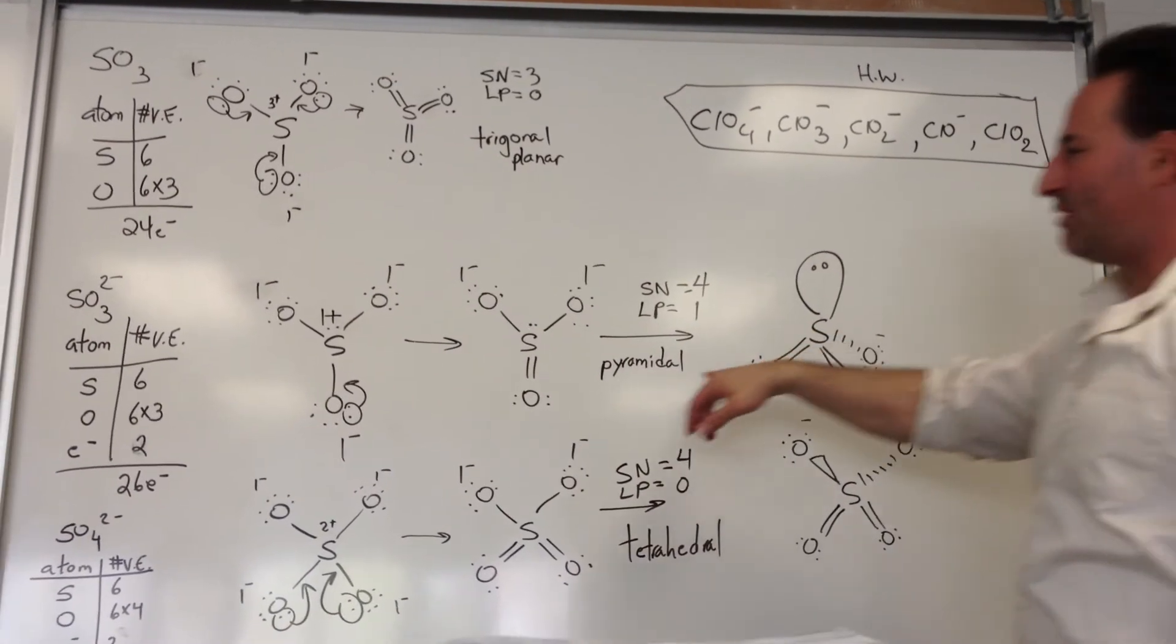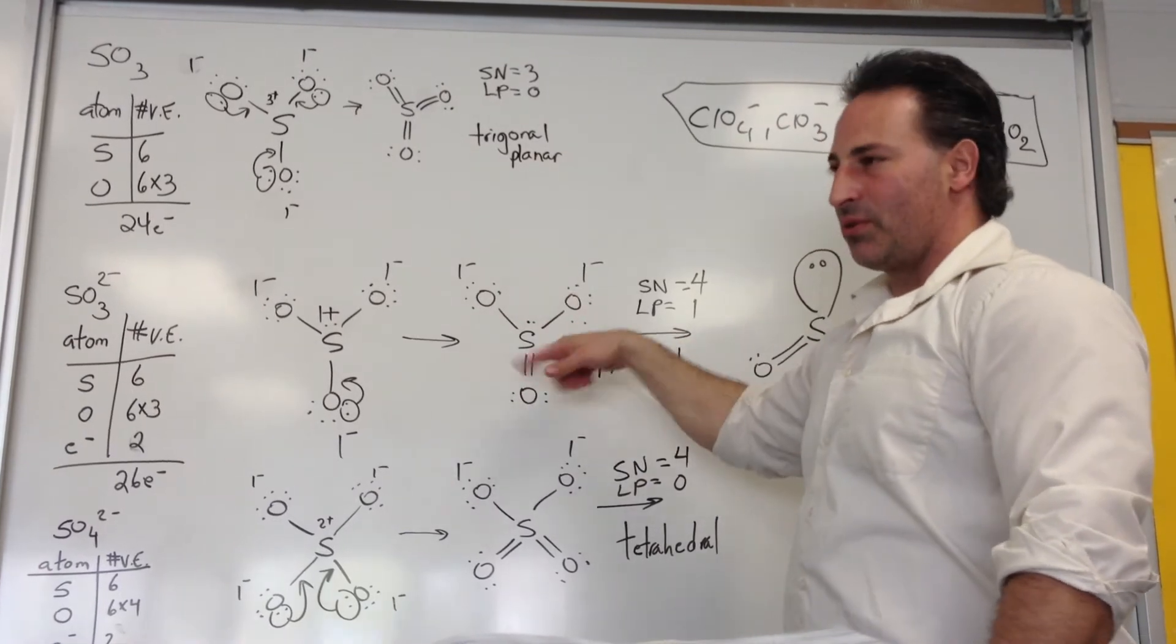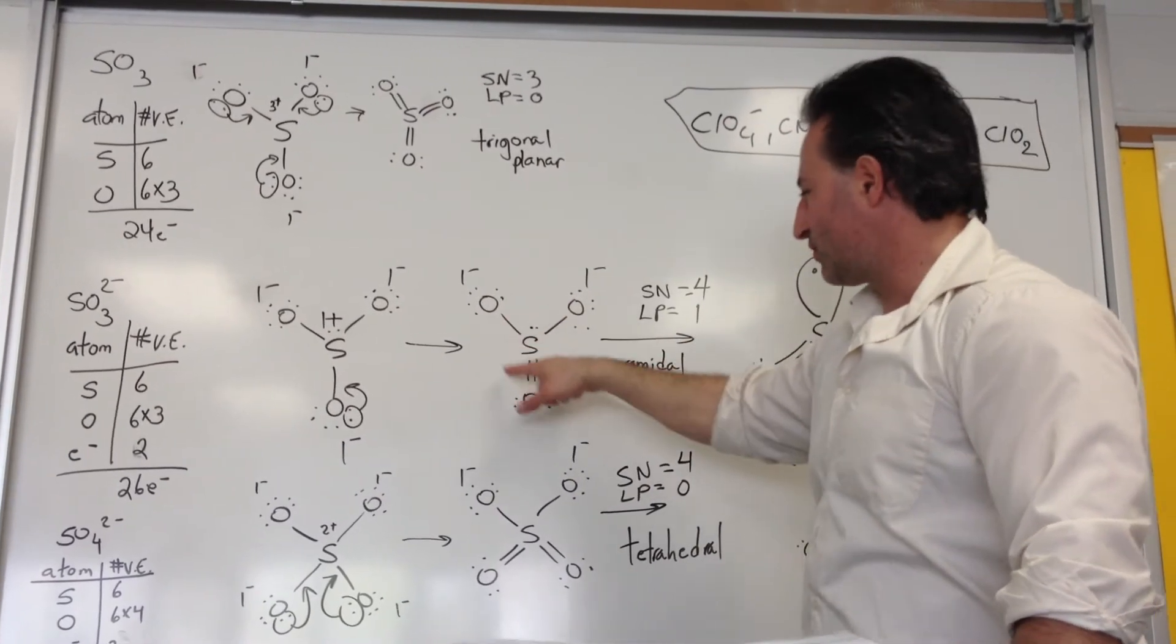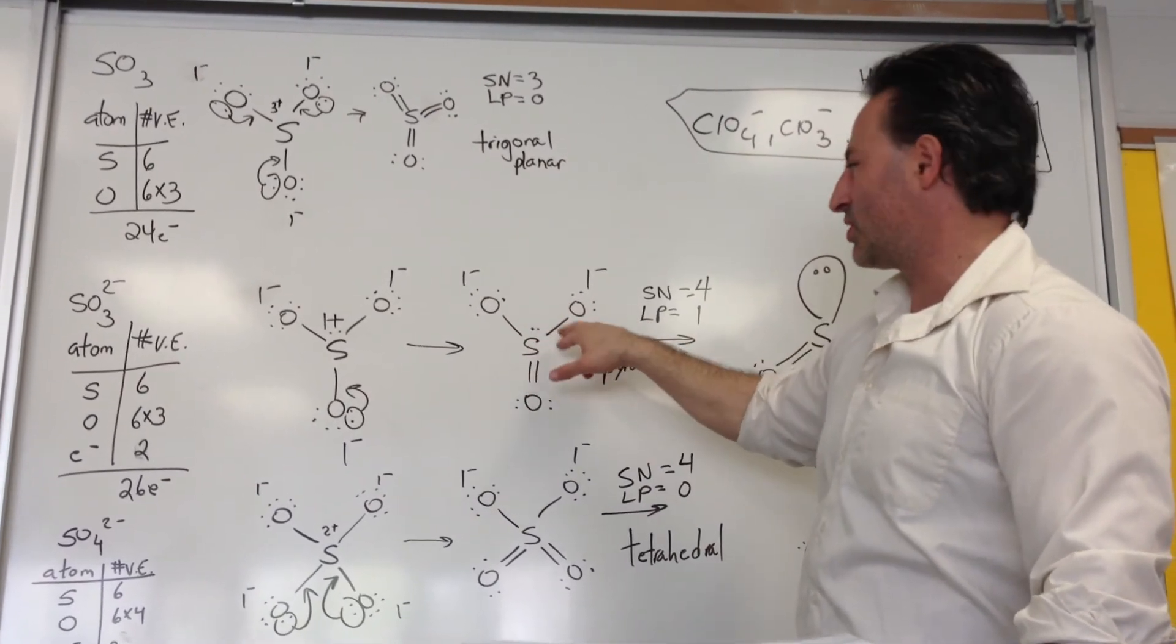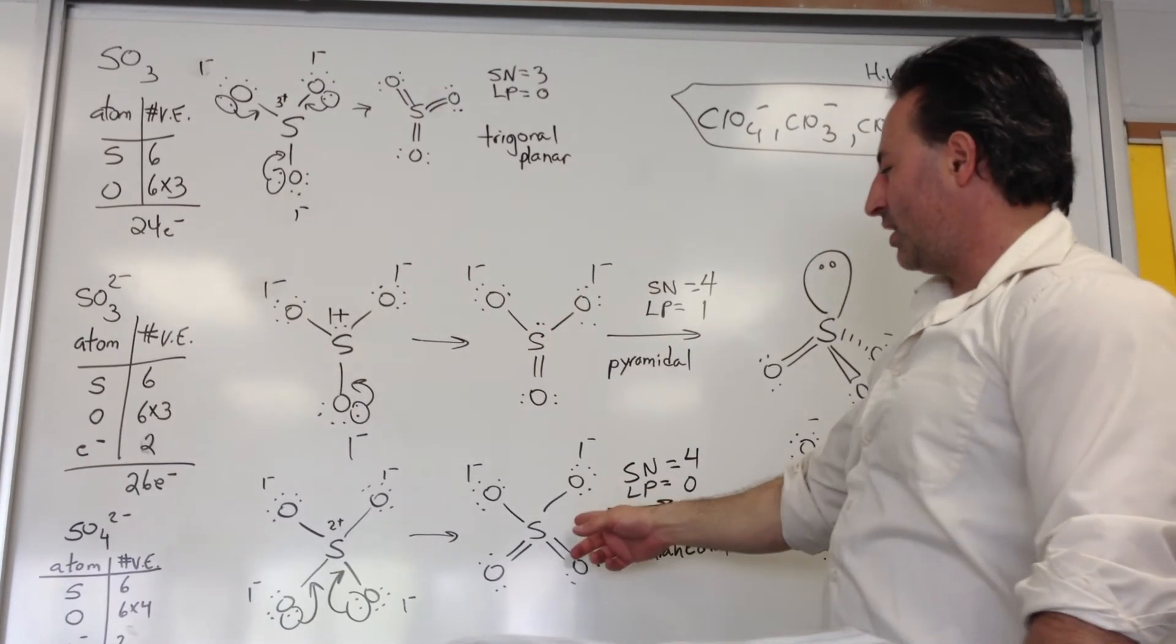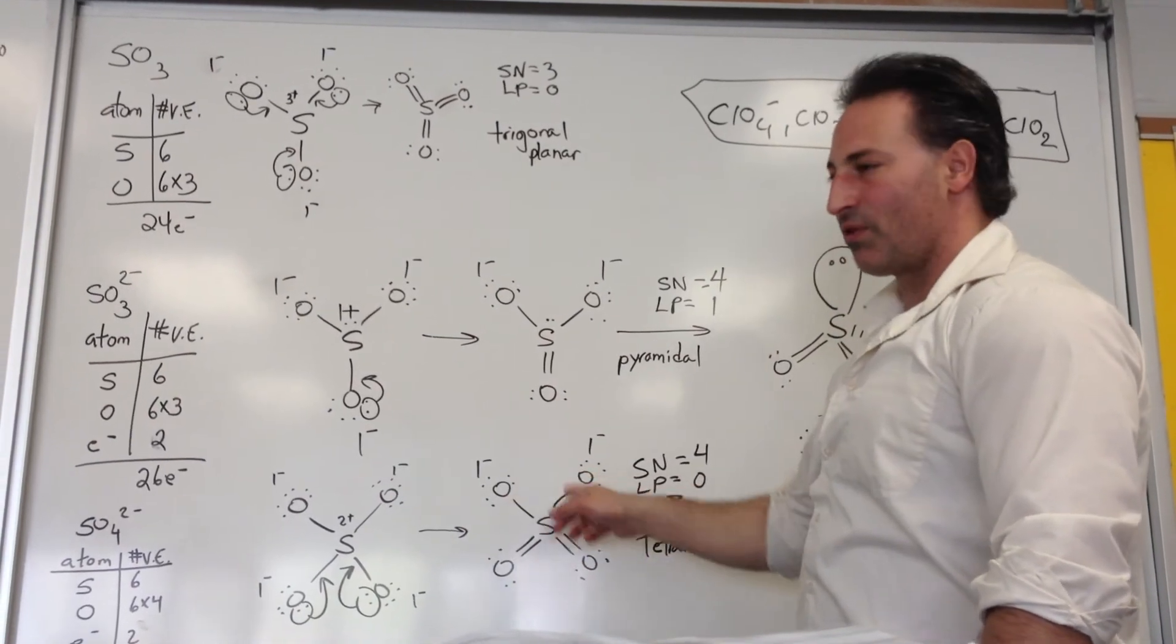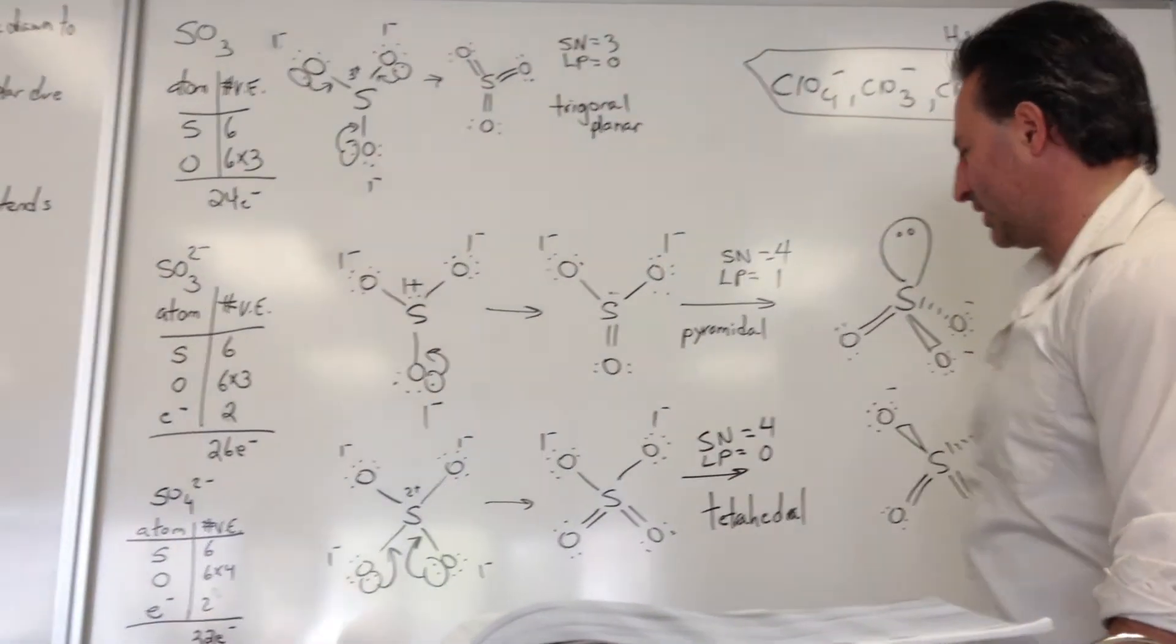And of course, recall that when you have one double bond, that double bond is shared along the three positions. So in fact, this is four bonds shared on three positions. So this molecule has one and one third bond character. And the sulfate anion would have six bonds shared over four positions. So that would be one and a half bond character.